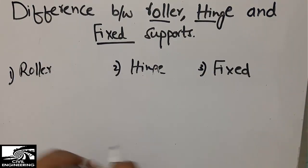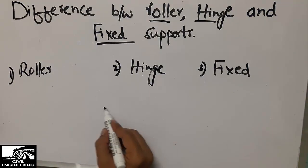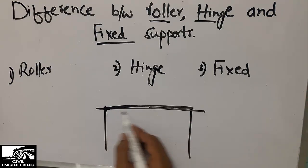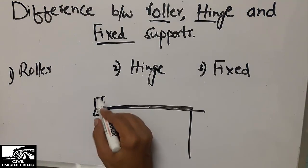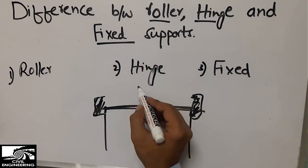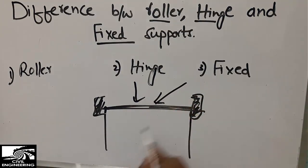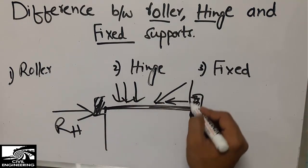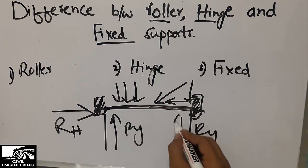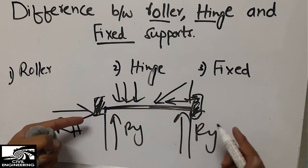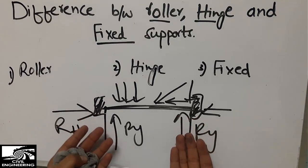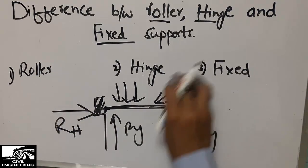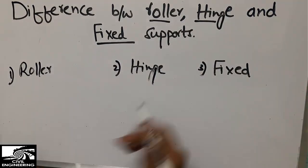For the hinge support in real life: I place two columns with a beam, but I also add some blocks at the base that can resist horizontal loads. When a load comes horizontally or vertically, the horizontal resistance is provided by the support blocks and vertical resistance Ry is also provided. So in this case, both horizontal and vertical demands are resisted — this is the hinge support.